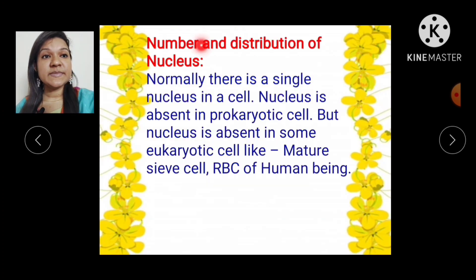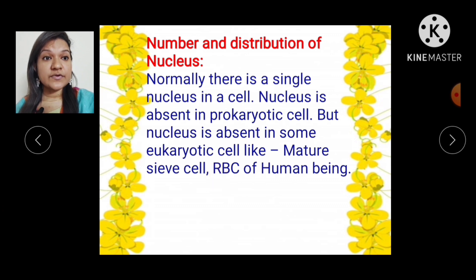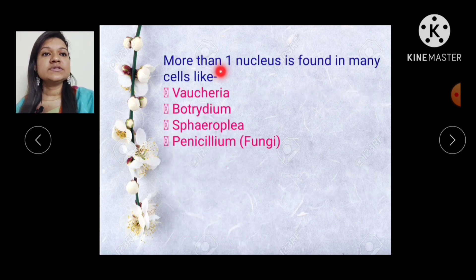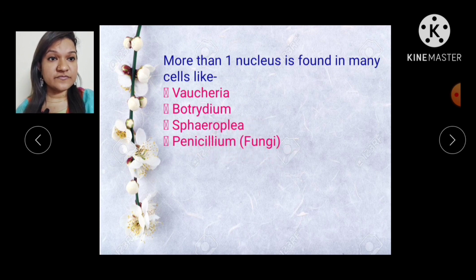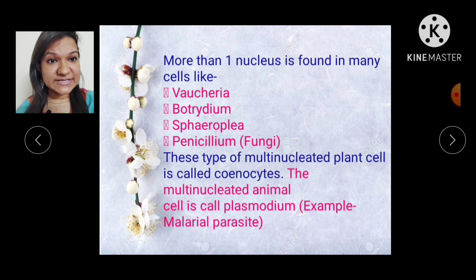Regarding the number and distribution of nucleus: normally there is a single nucleus in a cell. Nucleus is absent in prokaryotic cells and also absent in some eukaryotic cells like mature sieve cells and red blood cells of human beings. More than one nucleus is found in many cells like Boucheria, Botrydium, Sphaerozia, and Penicillium. Multi-nucleated plant cells are called coenocytes; the multi-nucleated animal cell is called plasmodium — for example, the malarial parasite.